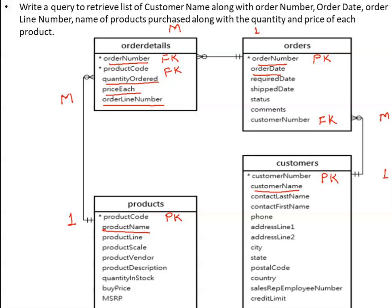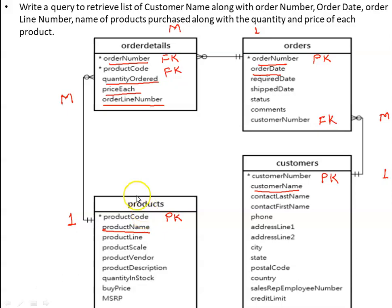Now our job is just to make use of these conditions and write our query. The join condition between the customers relation and the orders relation would be the customer number. The join condition between the order details and the orders relation would be the order number. The join condition between the order details and the products table would be the product code.